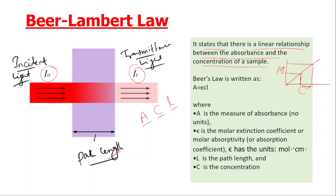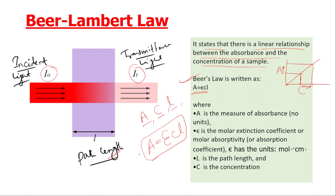When you understand Beer-Lambert Law, the formula for absorbance A is: A = εCL. So we have A, C, and L. The coefficient is Epsilon (ε), giving us A = εCL.